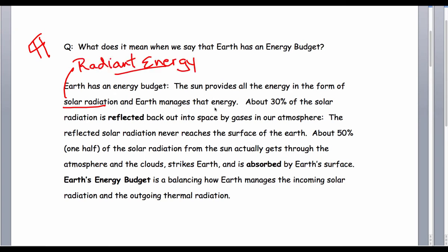About 30% of the solar radiation is reflected back out into space by gases in our atmosphere. The reflected solar radiation never reaches the surface of the Earth. So, reflected.